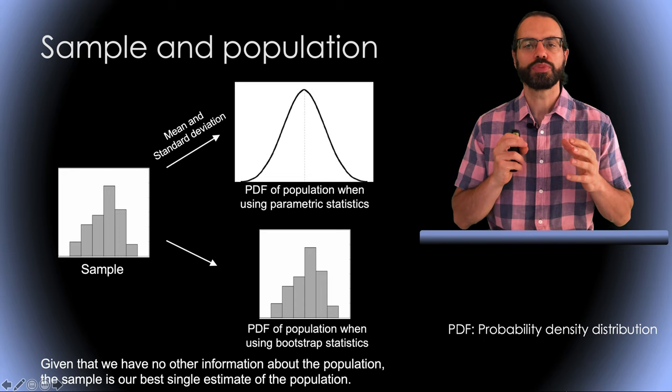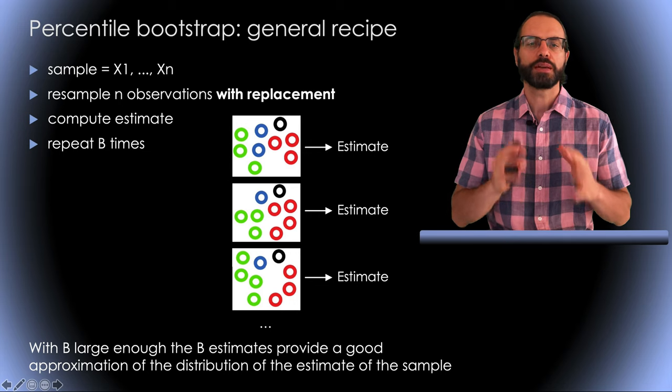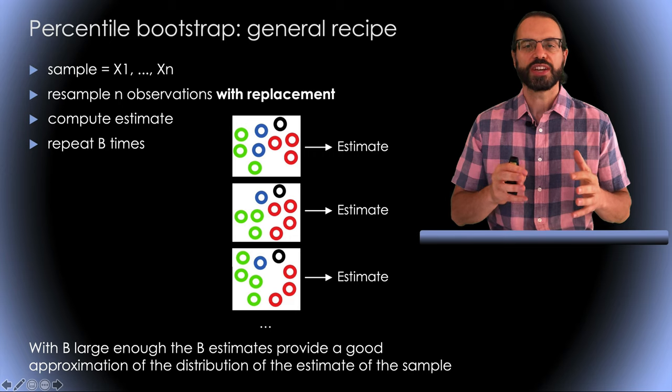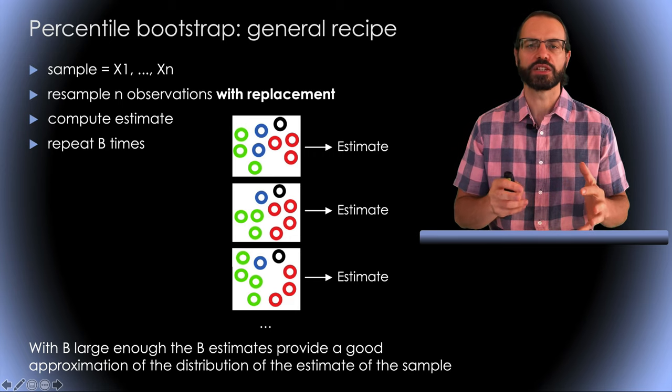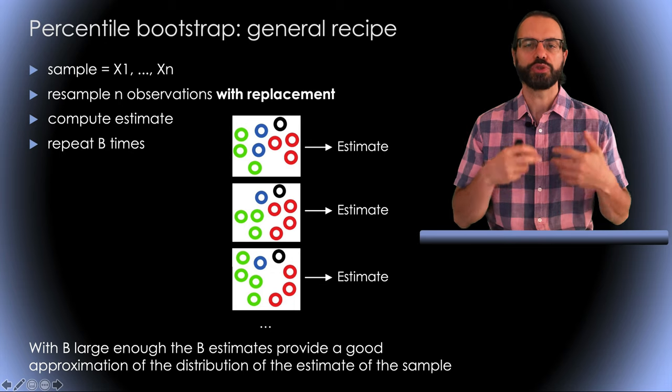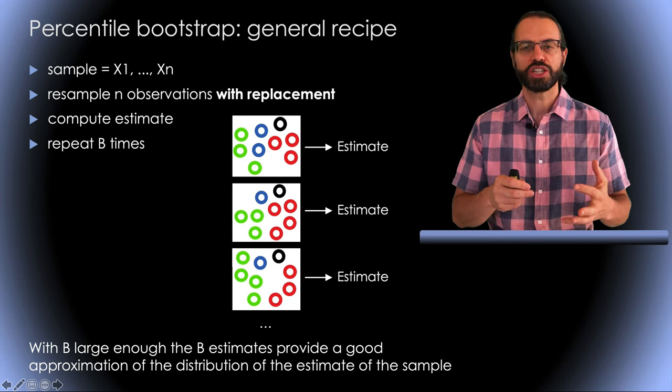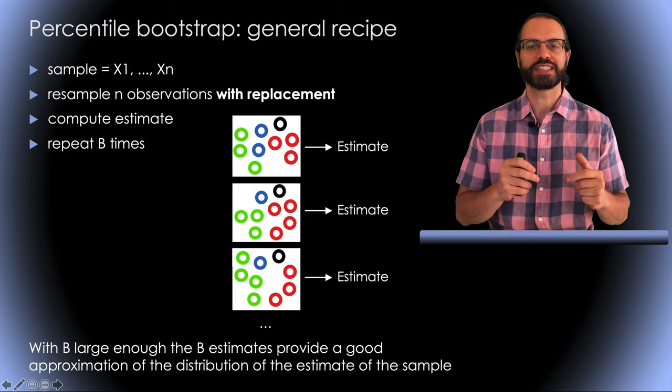So how do we compute bootstrap? Here is the general recipe. Resample among your observation or data with replacement. With replacement means that you can use twice the same data. Then you compute an estimate, such as the mean, for example, and you repeat that. When the number of repetition is large enough, we have a good approximation of the distribution of the estimated sample.